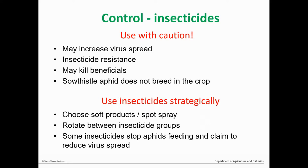As with all insecticide use, it's important to minimise resistance development by rotating between insecticide groups. Some newer products work by stopping aphids from feeding, and manufacturers claim this can help reduce virus spread. There is good evidence this is true for persistent viruses, but probably not for non-persistent viruses because they spread so quickly. Trials are currently being set up in Gatton and Bundaberg to assess the efficacy of some of these insecticides.